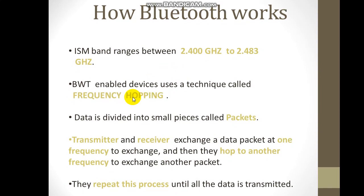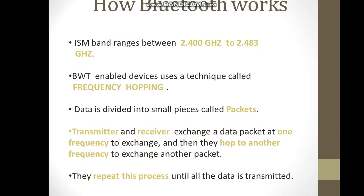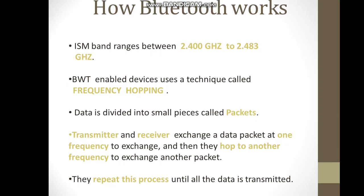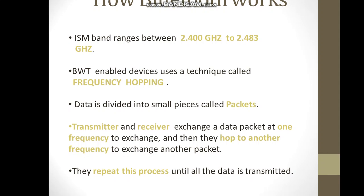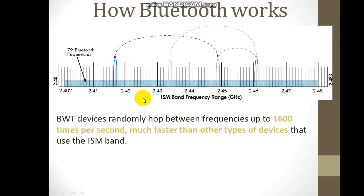You know the difference between direct sequence spread spectrum and frequency hopping spread spectrum. Bluetooth works on frequency hopping spread spectrum — every time the frequency will change when data is sent. When data is not received, the frequency changes again. This is the whole theory; we will see frequency hopping here.